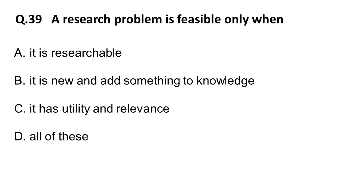The next question: a research problem is feasible only when — option A is it is researchable (if it is not researchable, it is not feasible), option B is it is new and adds something to knowledge (if it is already discovered, there is no point in researching it), option C is it has utility and relevance (also correct). The correct answer is all of these.